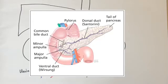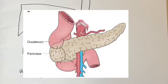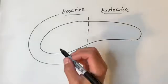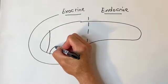There is the main duct of Wirsung and the accessory duct of Santorini. Pancreas divisum is when pancreatic secretions drain mainly through the accessory duct of Santorini, which can lead to chronic pancreatitis. If you have to pick an intervention for problematic pancreas divisum, answer with minor papilla sphincterotomy. Remember that annular pancreas obstructs the duodenum in babies and is seen as a double bubble on upper GI.